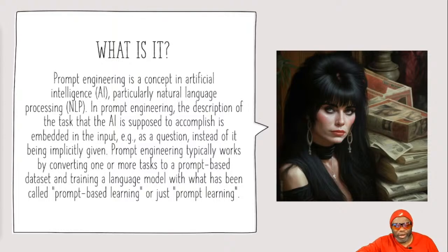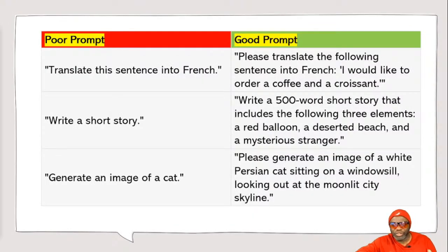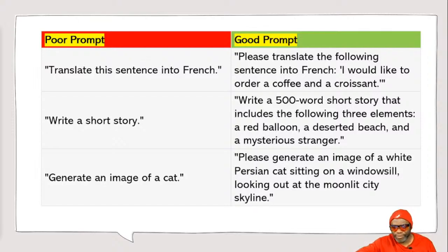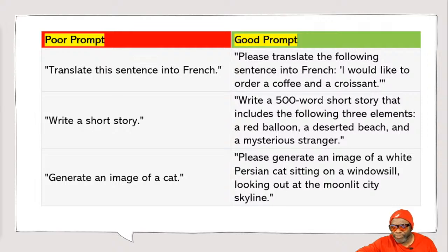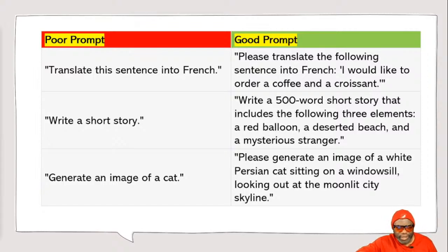Here are examples of good prompts versus bad prompts. A poor prompt: 'Translate this sentence to French' - with no sentence given. A good prompt: 'Please translate the following sentence into French: I would like to order a coffee and a croissant.' Or 'write a short story' is vague, but 'write a 500-word short story that includes a red balloon, a deserted beach, and a mysterious stranger' is specific. Similarly, 'generate an image of a cat' versus 'please generate an image of a white Persian cat sitting on a windowsill looking out at the moonlit city skyline.'